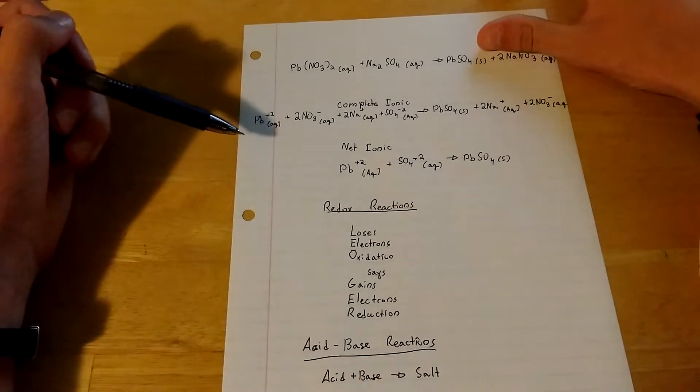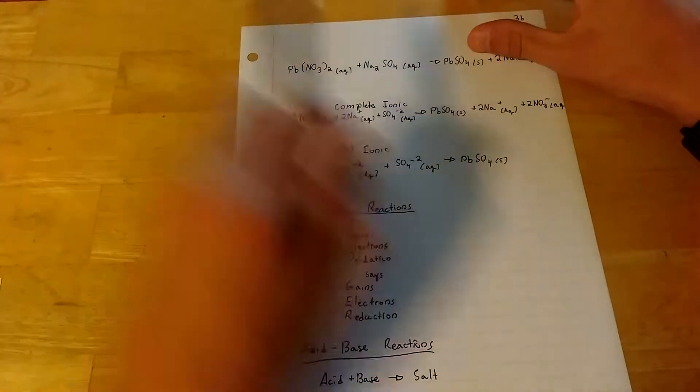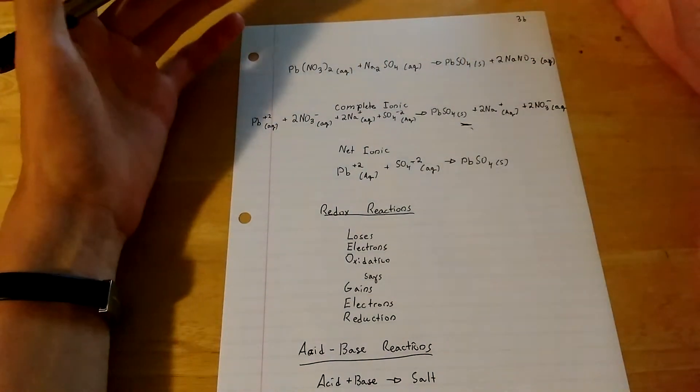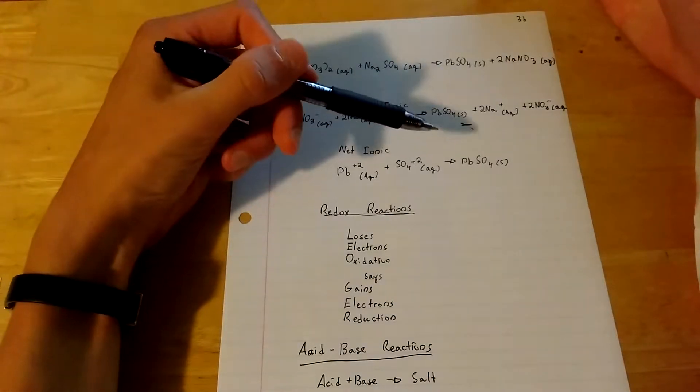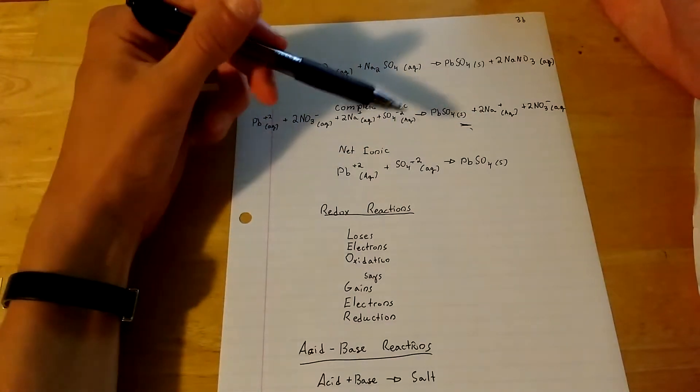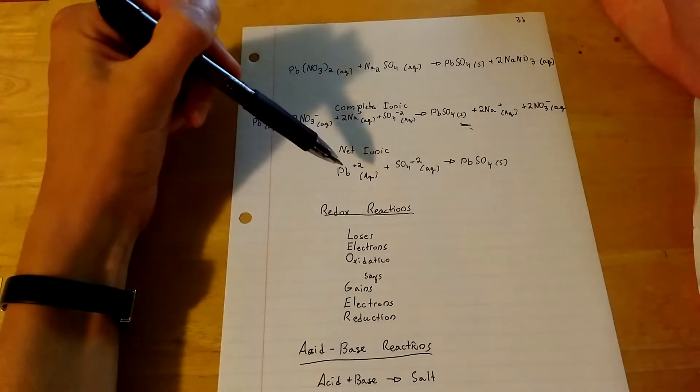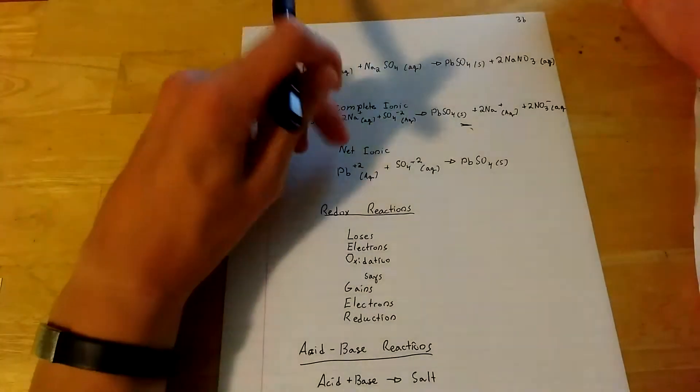Net ionic basically means that you get rid of everything, so you look for the solid thing or the liquid thing that was produced. In this case it was solid, and you want to look at which ions created that, and that's all you need to write down.